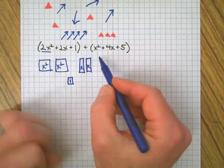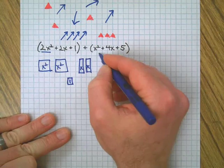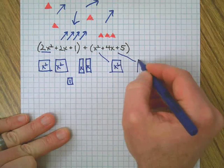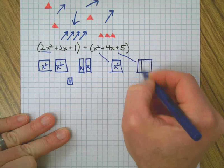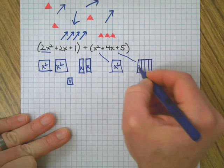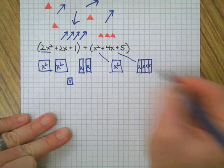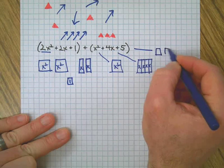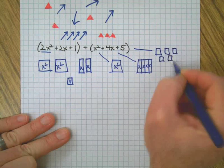Then, over here, I've got an x squared. I've got four of these guys, which I'm just going to make a block of them. One, two, three, four. And I've got five of these. One, two, three, four, five.